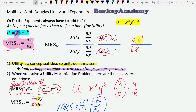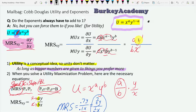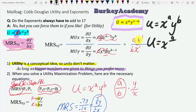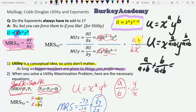So the trick is, if you ever want a utility function to be in that form and it isn't, all you have to do is take the exponents a and b and divide both by the sum a plus b. So: u equals x^(a/(a+b)) times y^(b/(a+b)). It's easy to see that a/(a+b) plus b/(a+b) equals (a+b)/(a+b), which equals one. That's how you convert any utility function into this standard form that many professors prefer — it's the simplest way to do it.